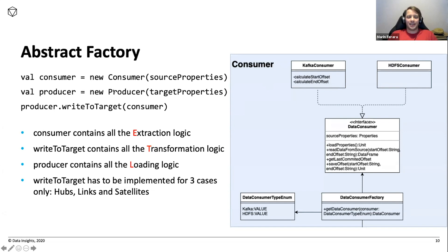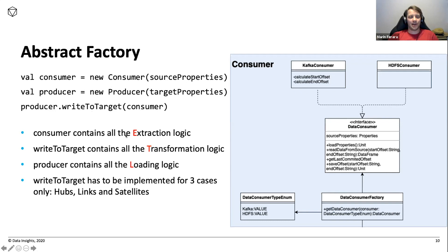The framework says: okay, let me give it to you. The only thing you have to do is say: producer, write into the target using this consumer source. And that's in the end how your code looks like. Of course there's a lot of ugly stuff behind the scenes, but you have a clear separation of your logic: consumer contains all your extraction logic, the target method contains all the transformation logic, and producer contains all the loading logic.